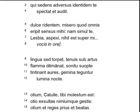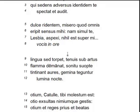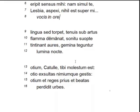Got the elision — "Lesbias pexi nihil est super mi." And then the next line is lost in the manuscript, but it's been reconstructed and fits really well: "Vokis in ore."